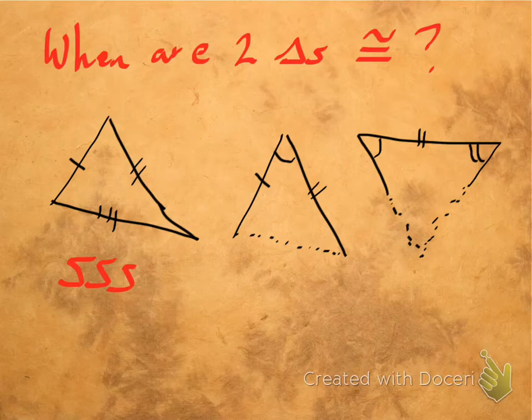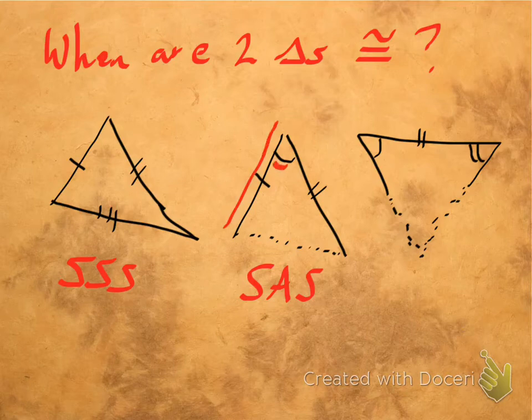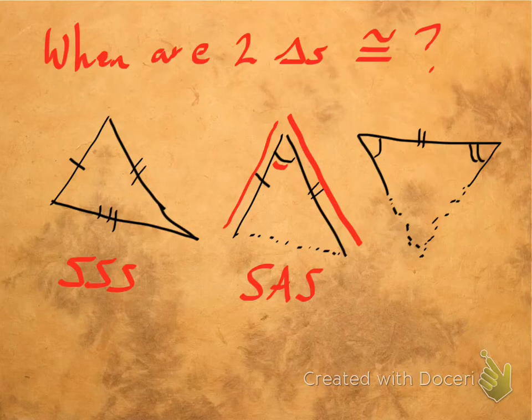It's also true if you know two sides and the angle between them, so we'll call that side angle side. In other words, if we go around the triangle, this is a side, this is a side, this is an angle, and this is another side. And I do the same thing in another triangle, I get an equal side, an equal angle, and an equal side. Then the two triangles would be congruent.